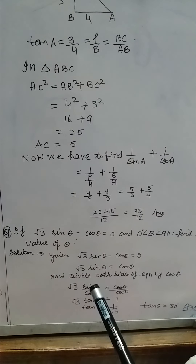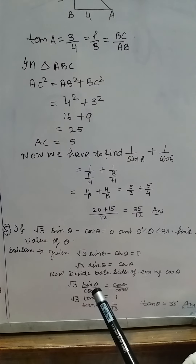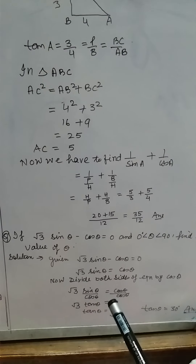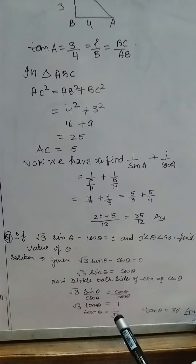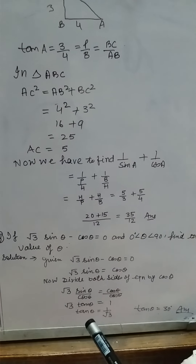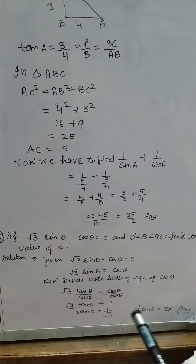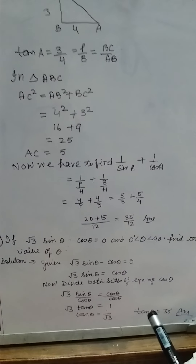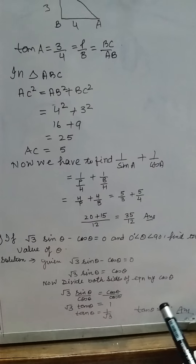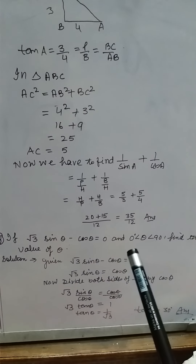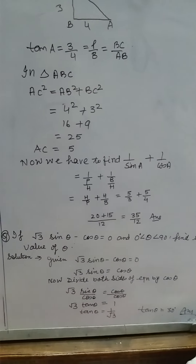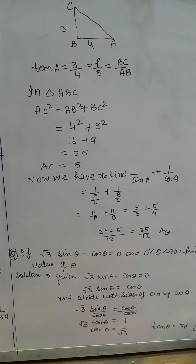So root 3 tan theta equals 1, because sin theta by cos theta equals tan theta. Therefore tan theta equals 1 upon root 3. And the angle whose tan is 1 upon root 3 is 30 degrees. Therefore theta equals 30 degrees, and this 30 degrees is greater than 0 but less than 90. This is the answer.